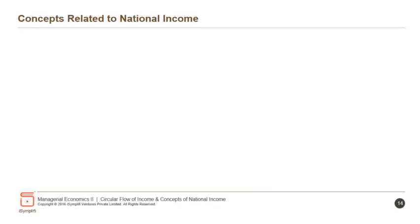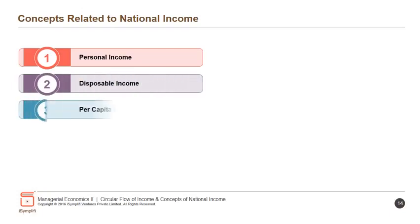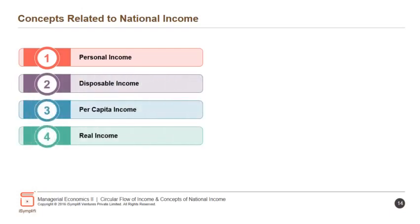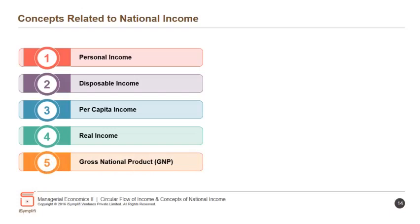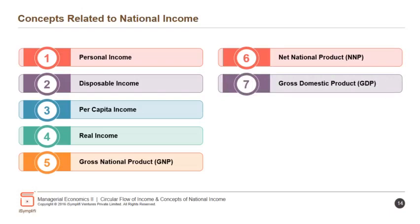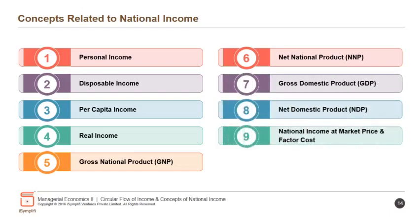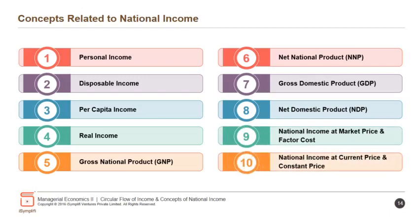Moving on, there are ten concepts related to national income: personal income, disposable income, per capita income, real income, gross national product (GNP), net national product (NNP), gross domestic product (GDP), net domestic product (NDP), national income at market price and factor cost, and national income at current price and constant price. Let's understand each of these in detail.